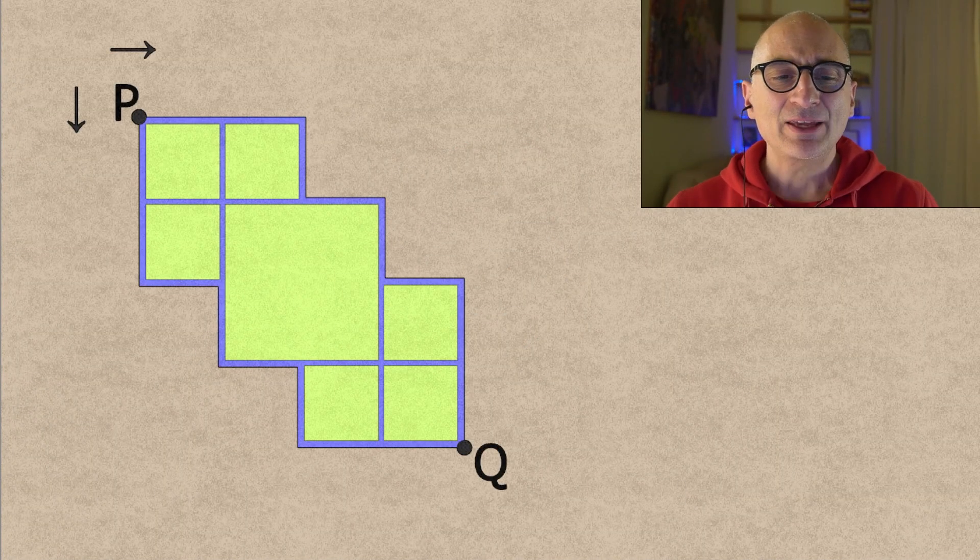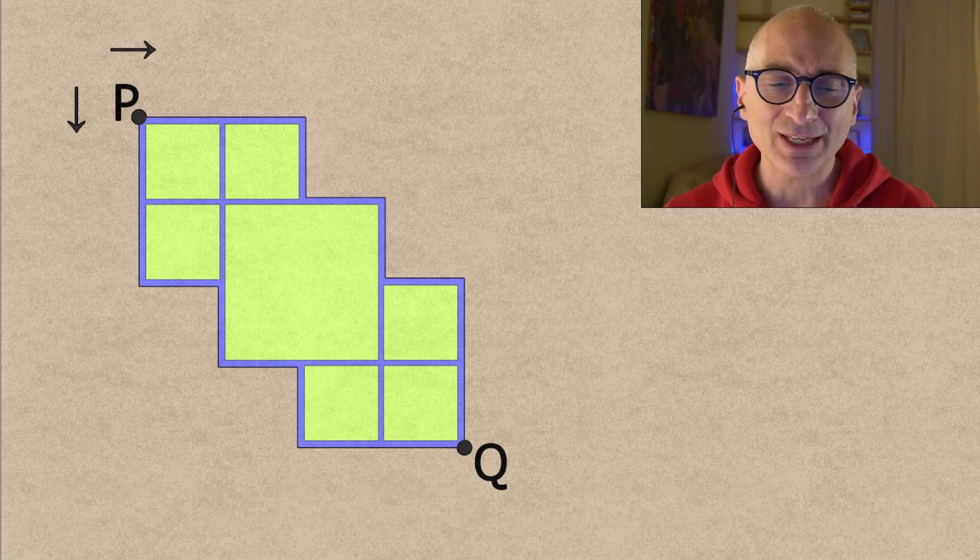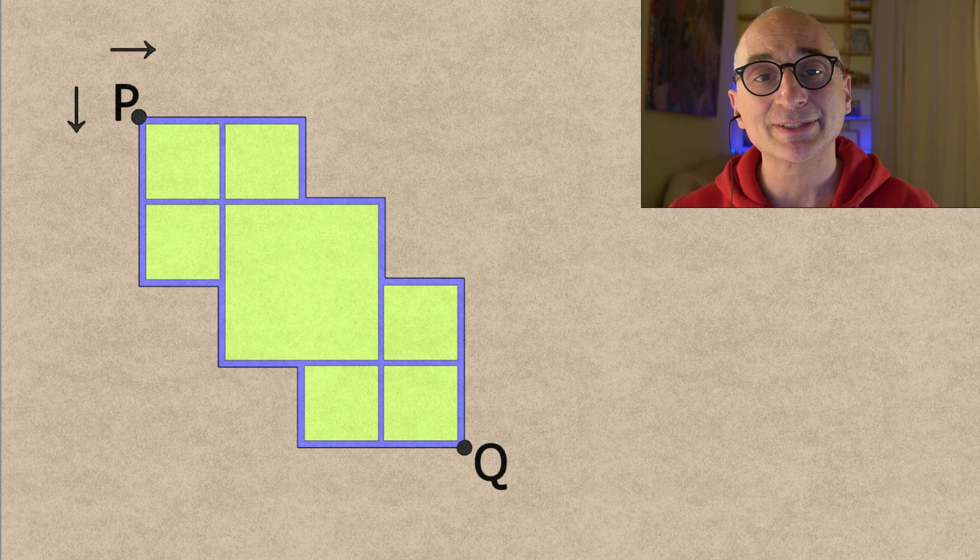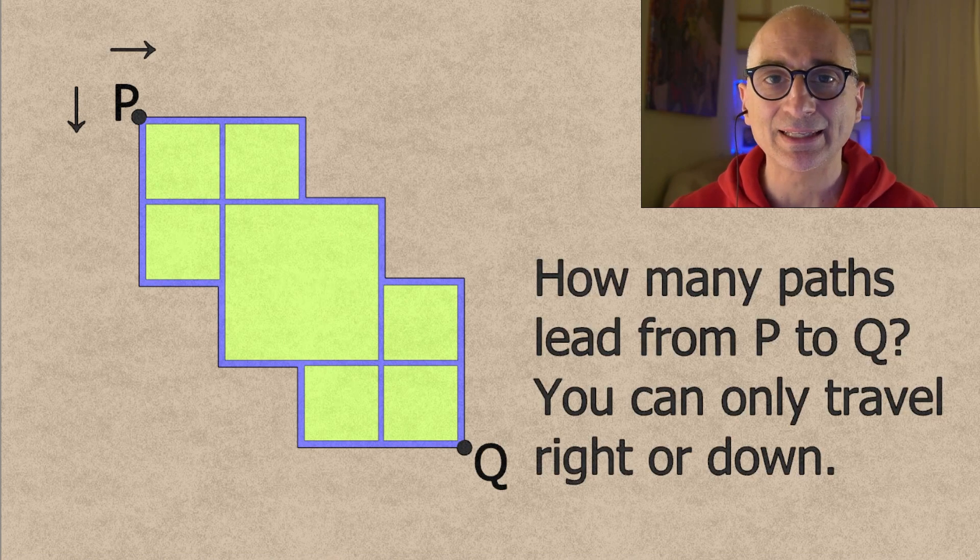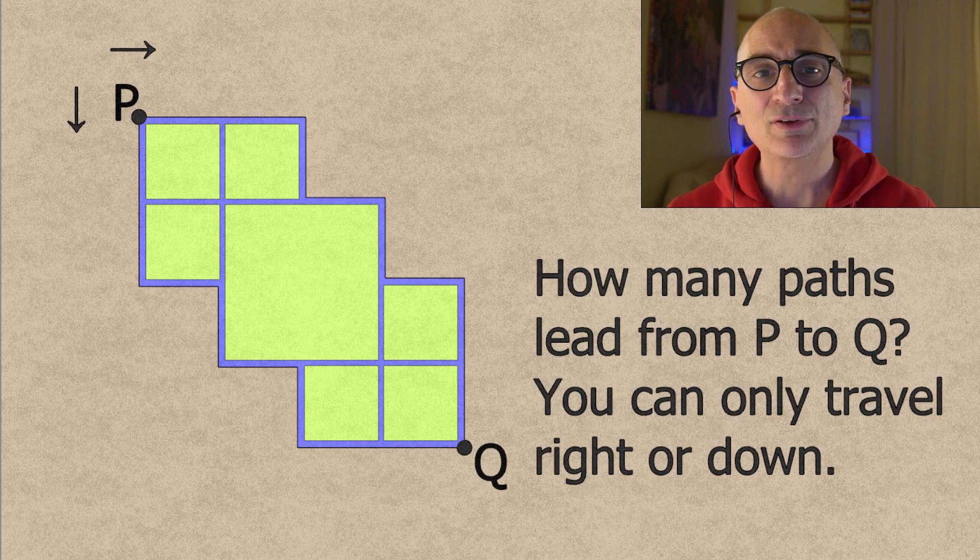So here's a nice and clever puzzle for you. You have all these streets and you want to go from P to Q, but you can only travel right or down. And the question for you is how many paths lead from P to Q if you can only travel right or down.